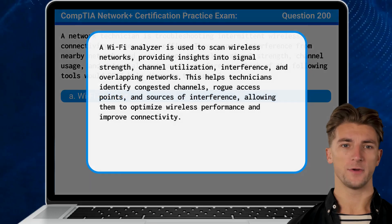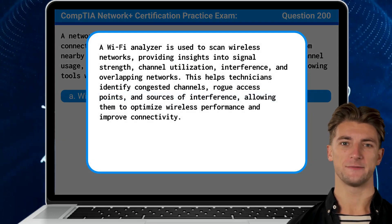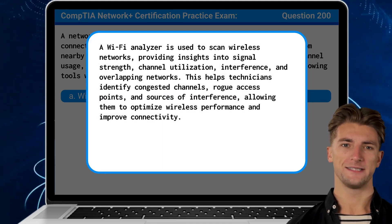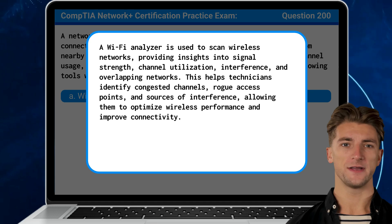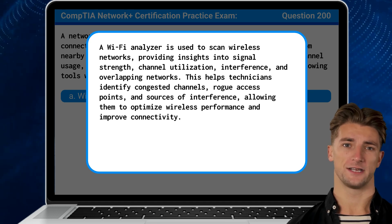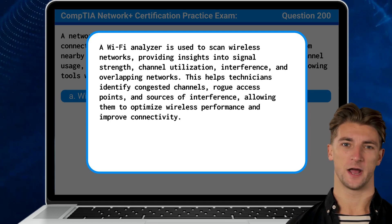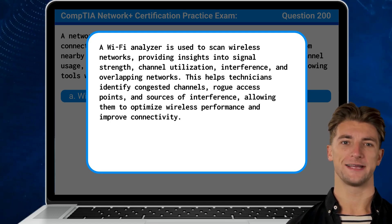A Wi-Fi analyzer is used to scan wireless networks, providing insights into signal strength, channel utilization, interference, and overlapping networks. This helps technicians identify congested channels, rogue access points, and sources of interference, allowing them to optimize wireless performance and improve connectivity.